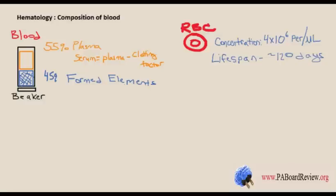Red blood cells are anucleated cells that circulate through the bloodstream, wear out, and are eventually recycled by the spleen. When there is a decrease in oxygen detected by the kidneys, erythropoietin is released and red blood cells are formed in the bone marrow. In adults, it's flat bones like the sternum and ribs. In pediatrics, it's all bones, including long bones.